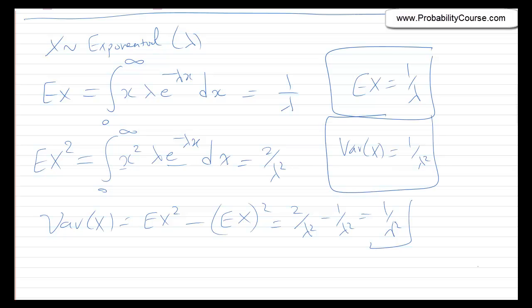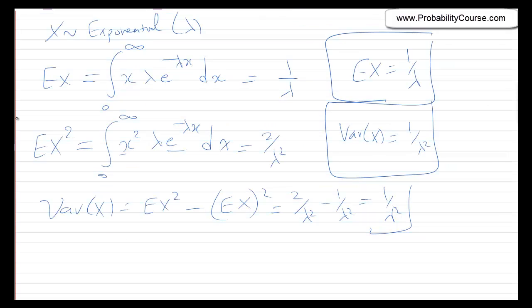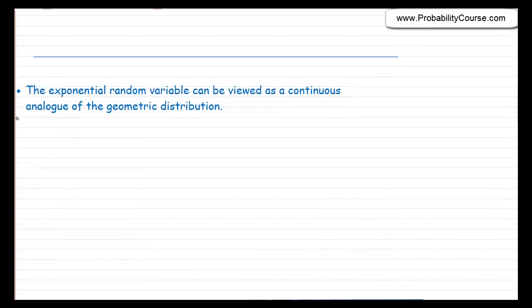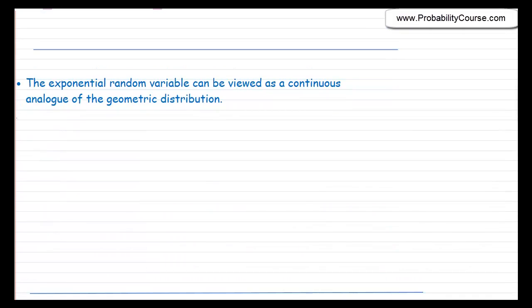Okay, now that we know the PDF, the CDF, the expected value, and the variance, let's talk a little bit about the properties of the exponential random variable. The first property is that the exponential random variable can be viewed as a continuous analog of the geometric distribution.